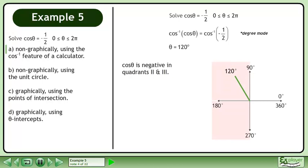Cos theta is negative in quadrants 2 and 3. Use symmetry to draw the angle in quadrant 3. The second angle is 240 degrees.